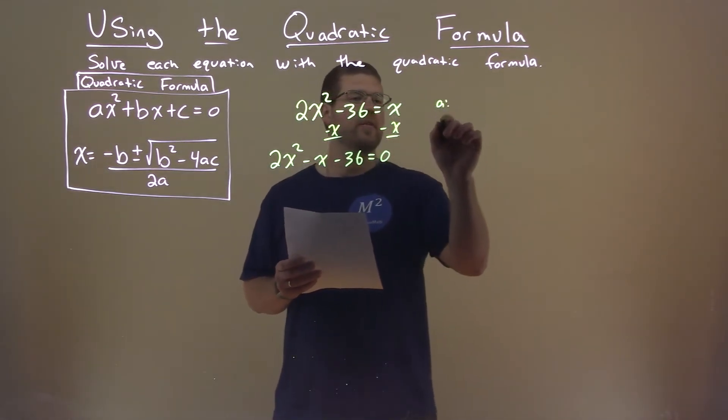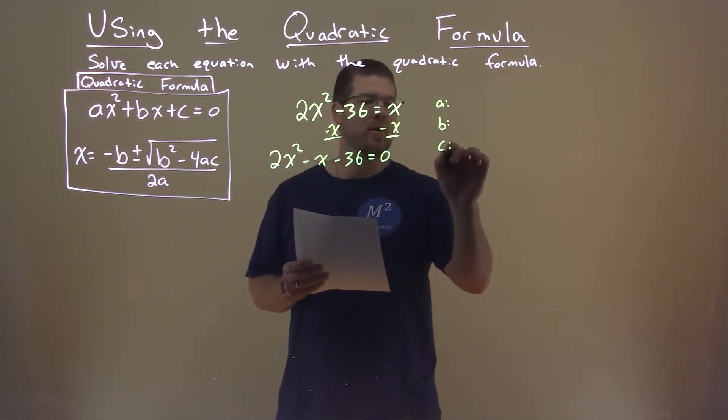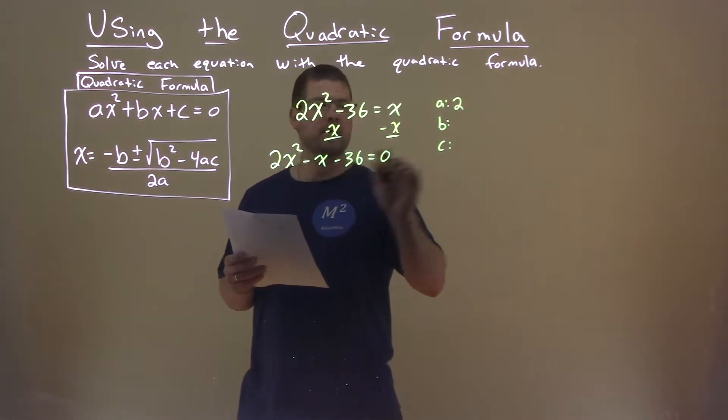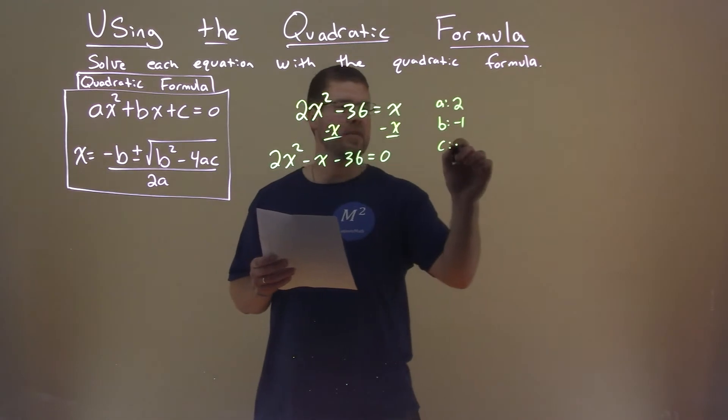Now with that information, we need to find our a, our b, and our c values. Well, a value is two, b value is negative one, and c value is negative 36.